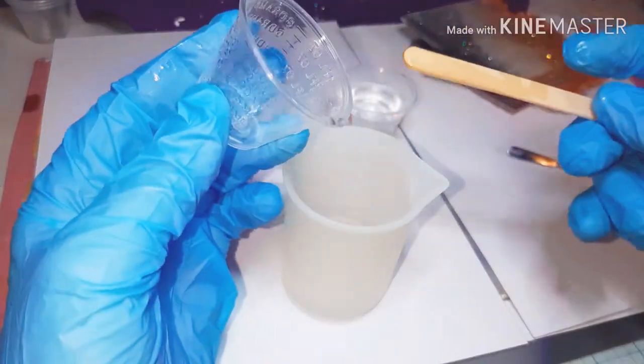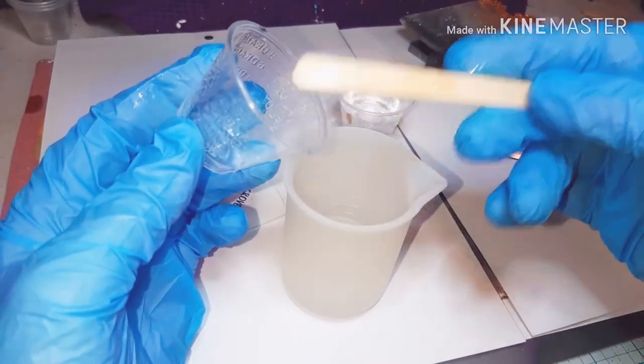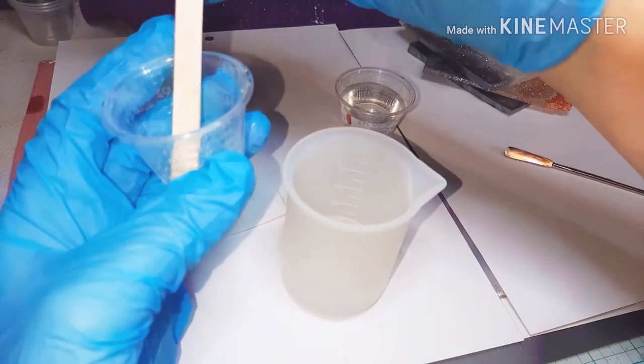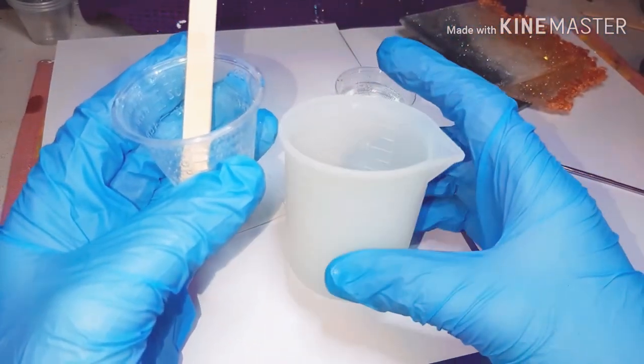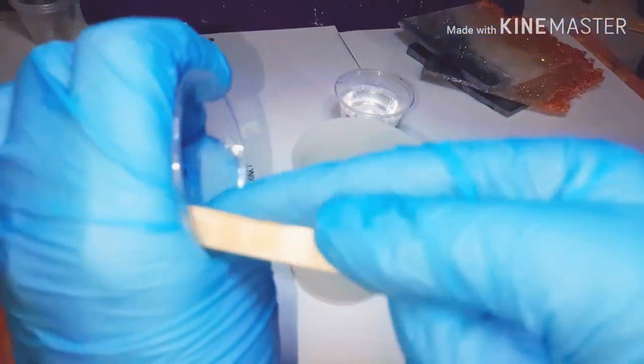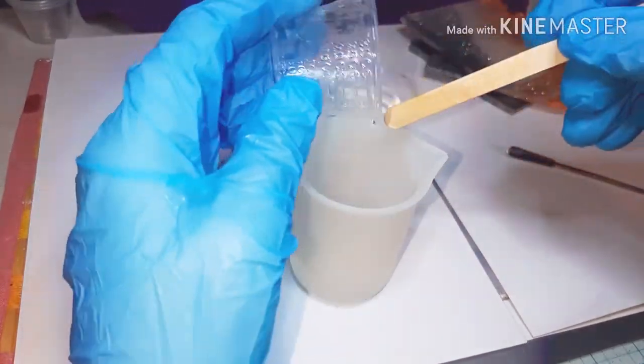So all I'm doing right now is I'm scraping both of, I'm going to scrape both of my cups, part A and part B into one container. And I like to use, you really can use anything. I use plastic cups, I use silicone cups, really whatever you want to use, you can use whatever's your preference. Right now I'm using one of the silicone cups.